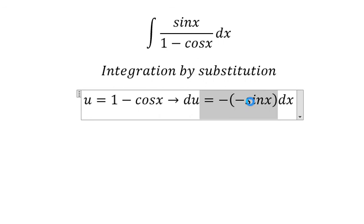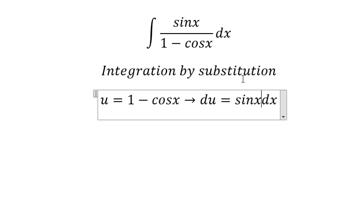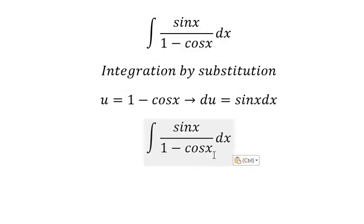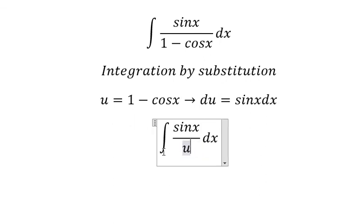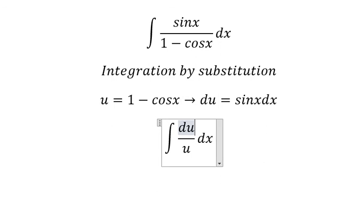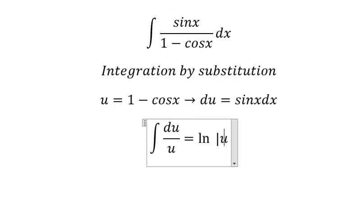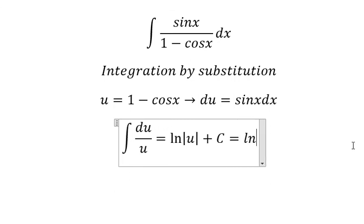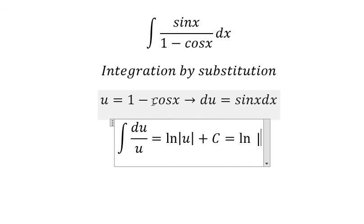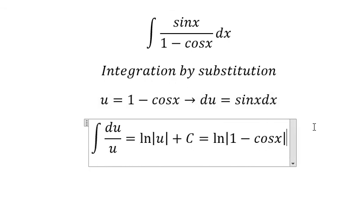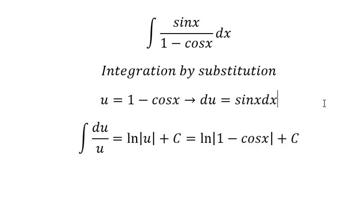So this part we change to u, and sin x dx we change to du. The integral of this gives ln of the absolute value of u, and we add the constant C. Here u is 1 minus cos x, so the answer is ln|1 - cos x| + C. This is the end — thank you for watching.